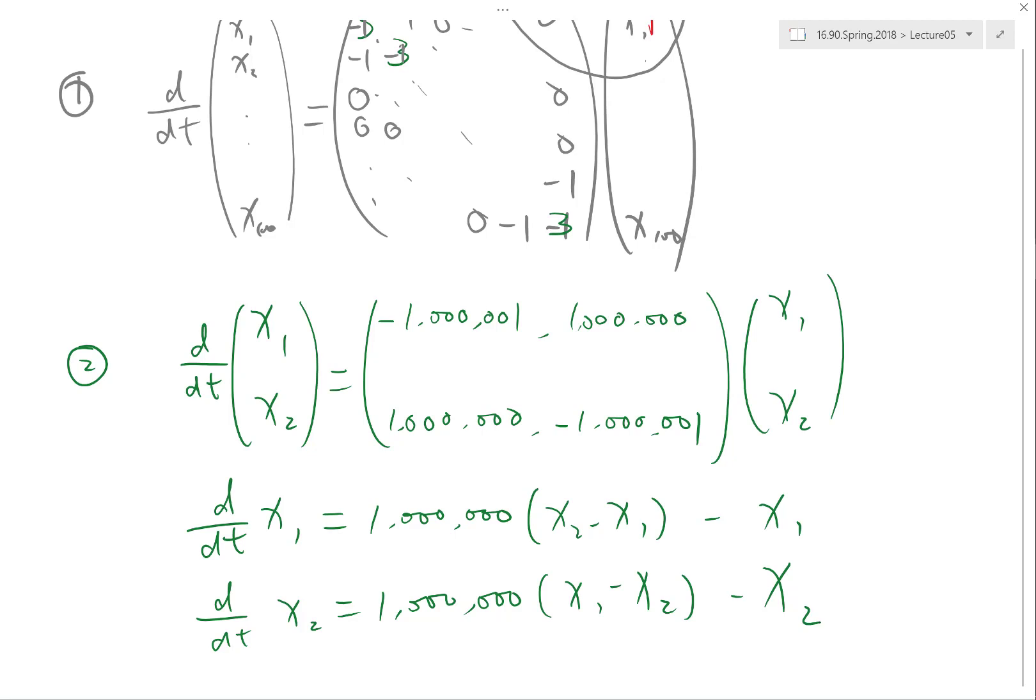So that's really an example of what we call a stiff system. A stiff system is a system that has orders of magnitude difference in time scales. What we really mean by time scale in the mathematical sense is that when you linearize the system into a matrix and do eigenvalue analysis to the matrix, you get eigenvalues of very different orders of magnitude.